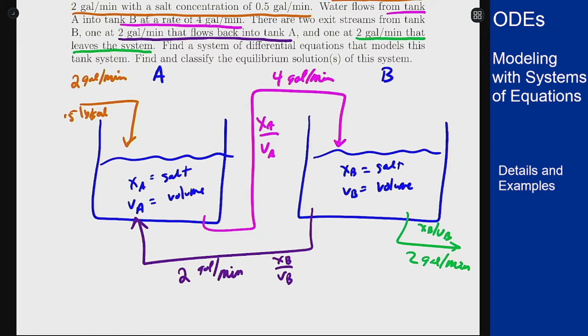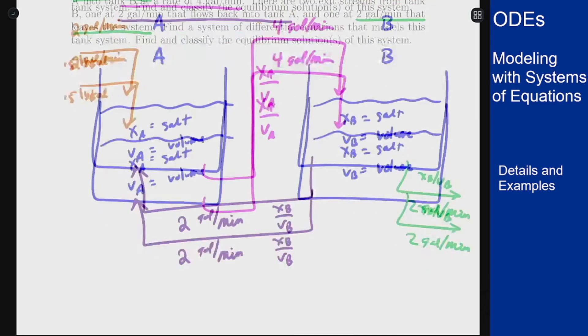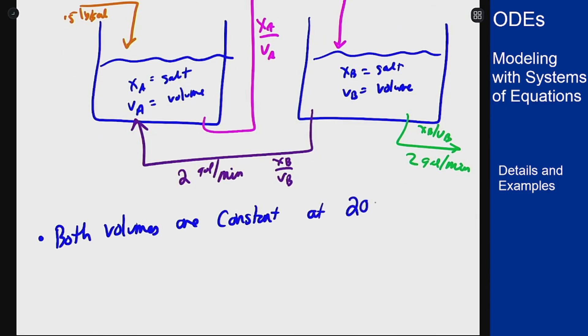Let's look at volumes first. We see we have 2 in, 2 in to A and 4 out of A. So the volume of A is constant and the same goes for B: 4 in, 2 out, 2 out. So both volumes are constant which is great, and they're at 200 gallons because that's what the problem said they both started at. Now to actually write this equation, we want to look at how do these different amounts of salt change in time.